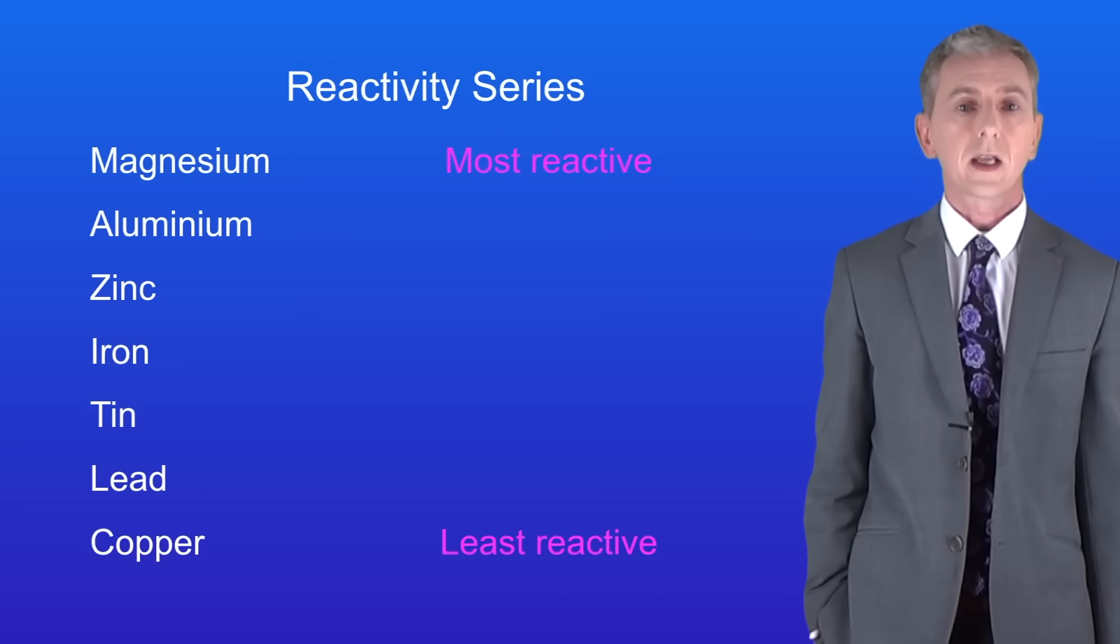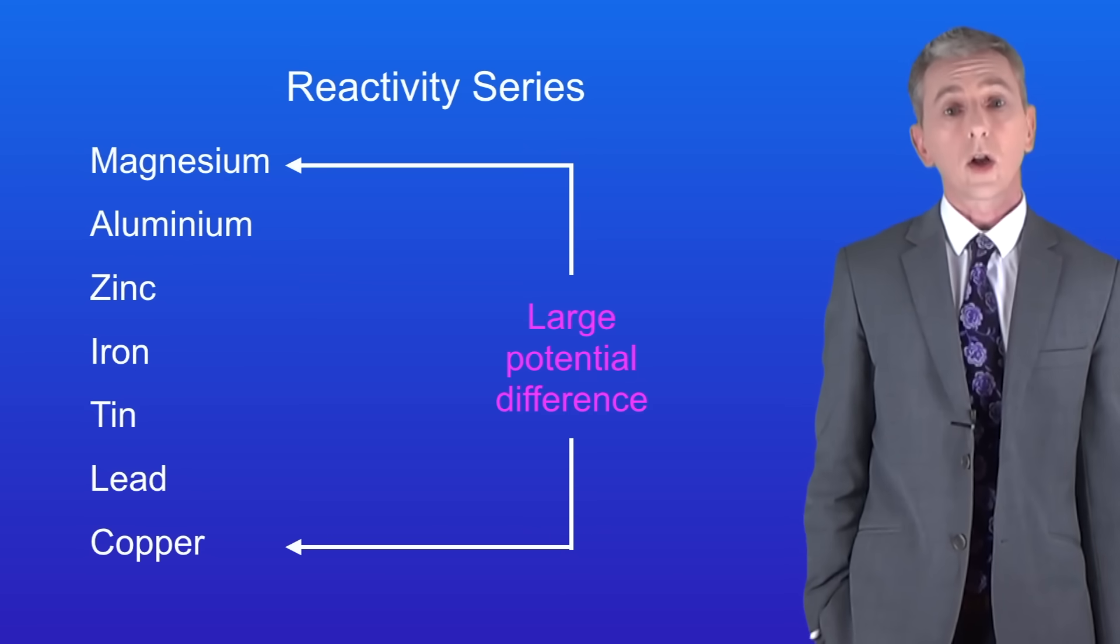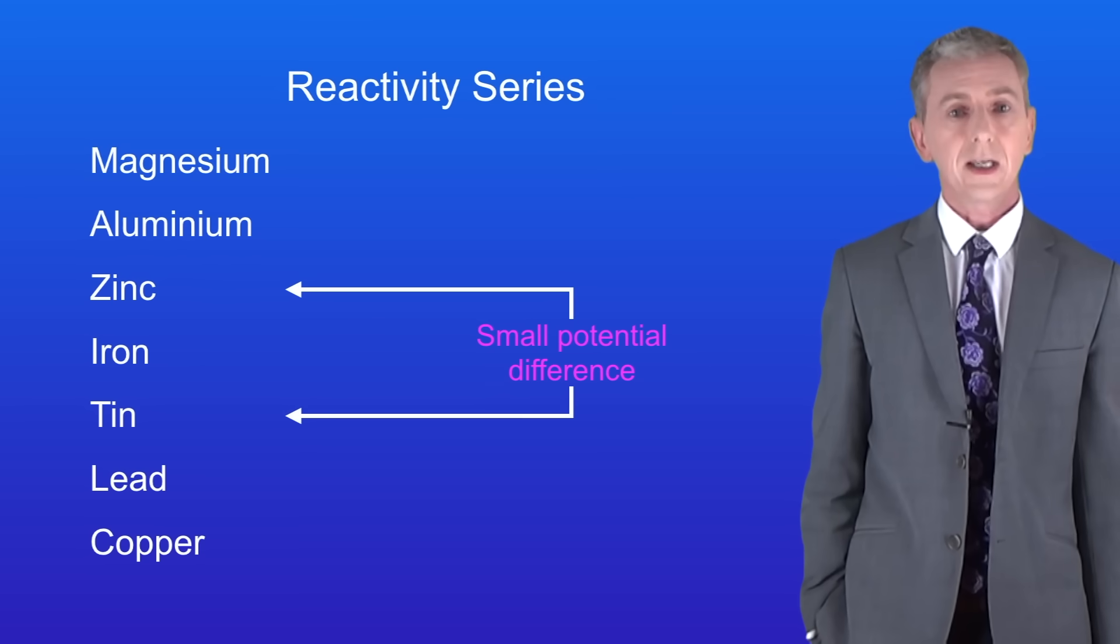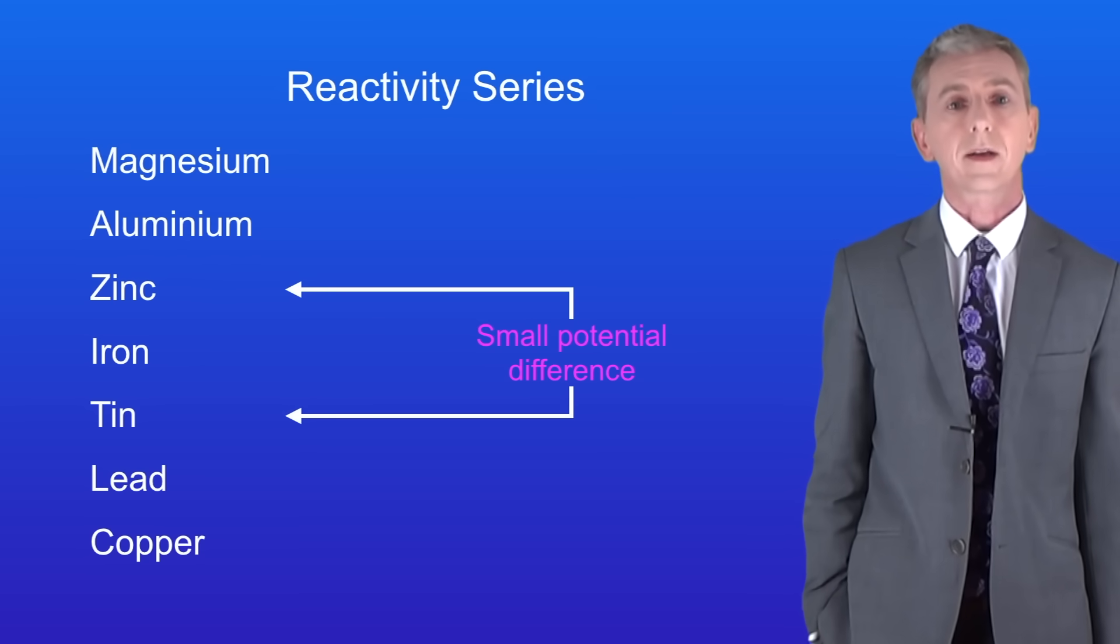For example, a cell containing magnesium and copper will have a large potential difference. However, a cell containing zinc and tin will have a smaller potential difference as there's a smaller difference in reactivity between the two metals.